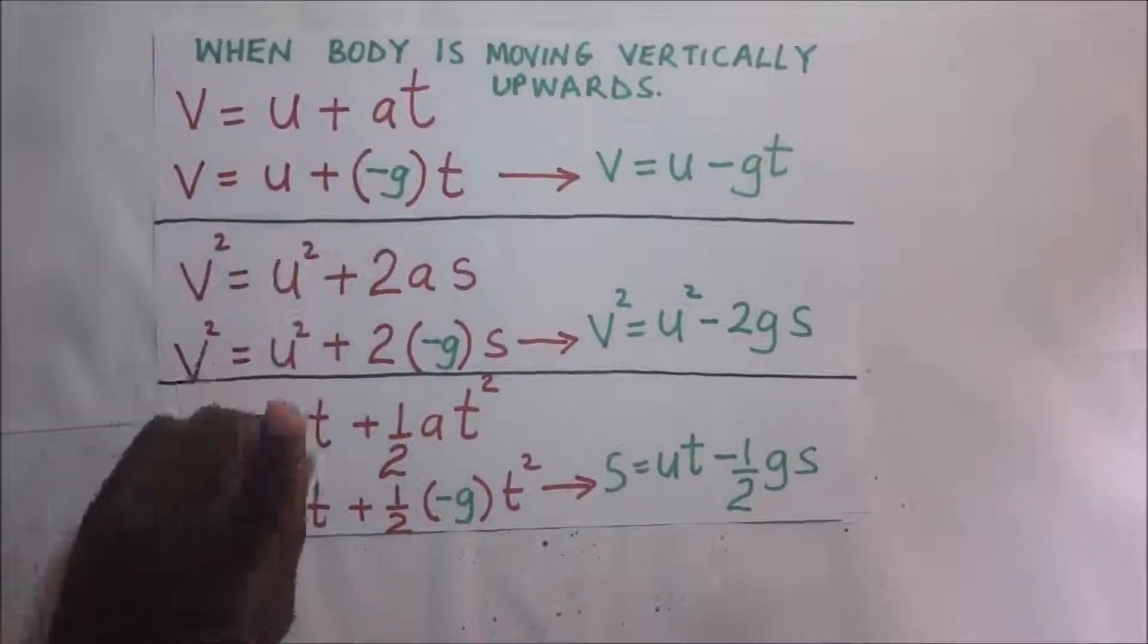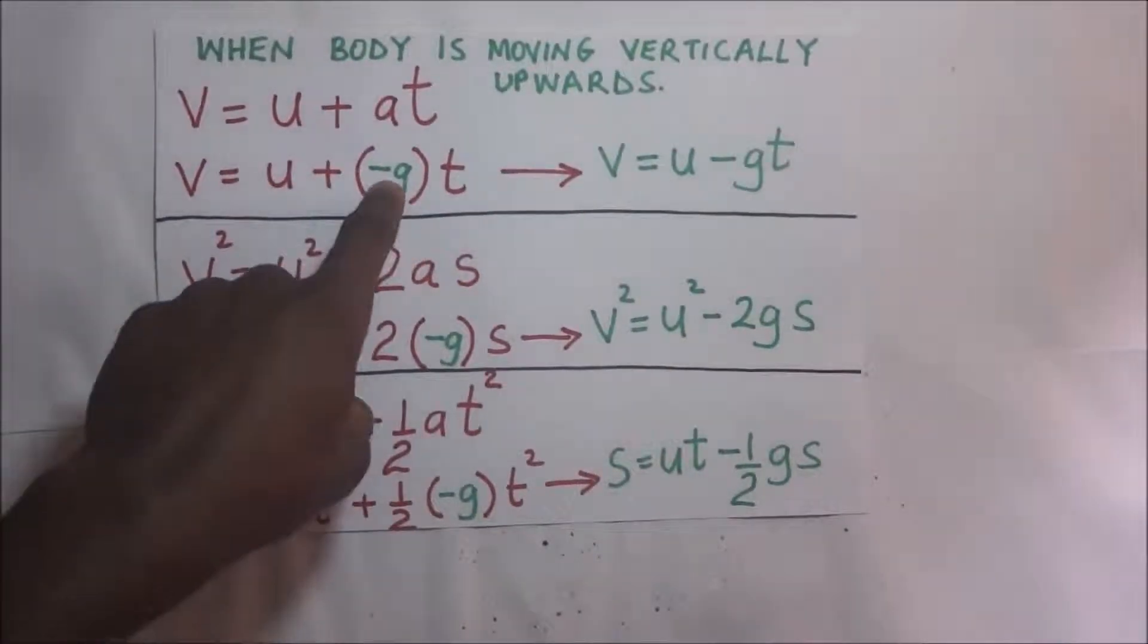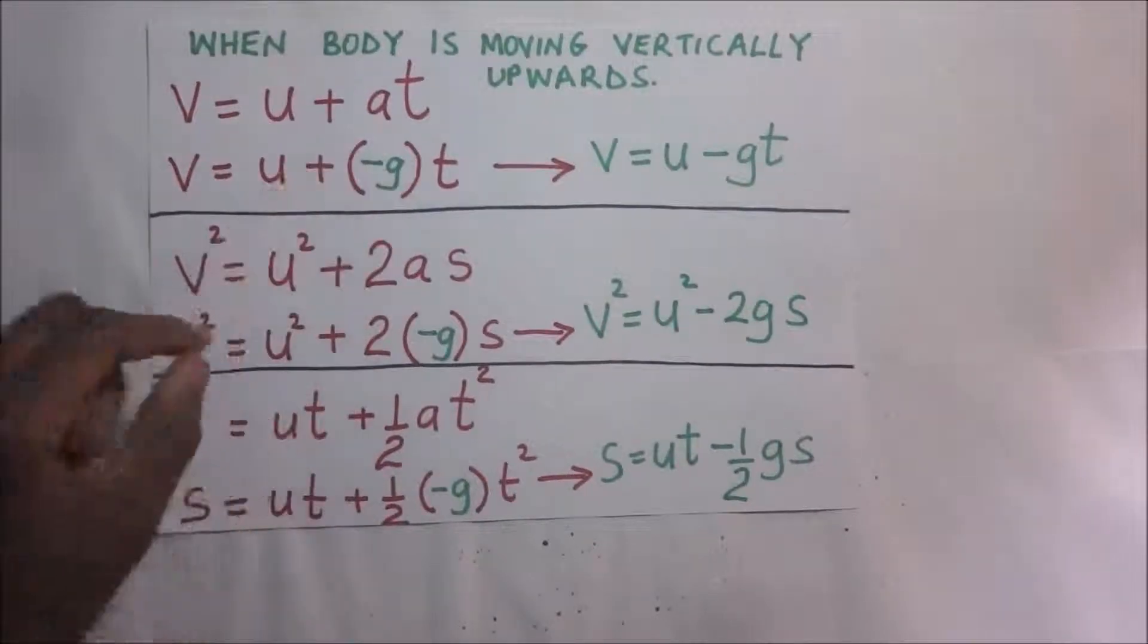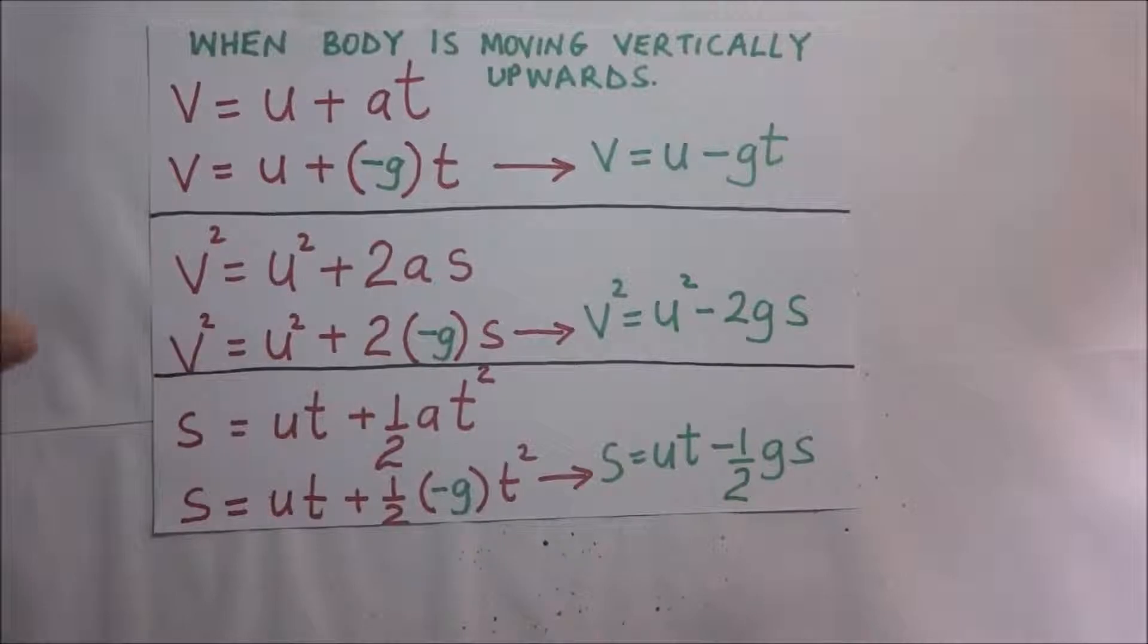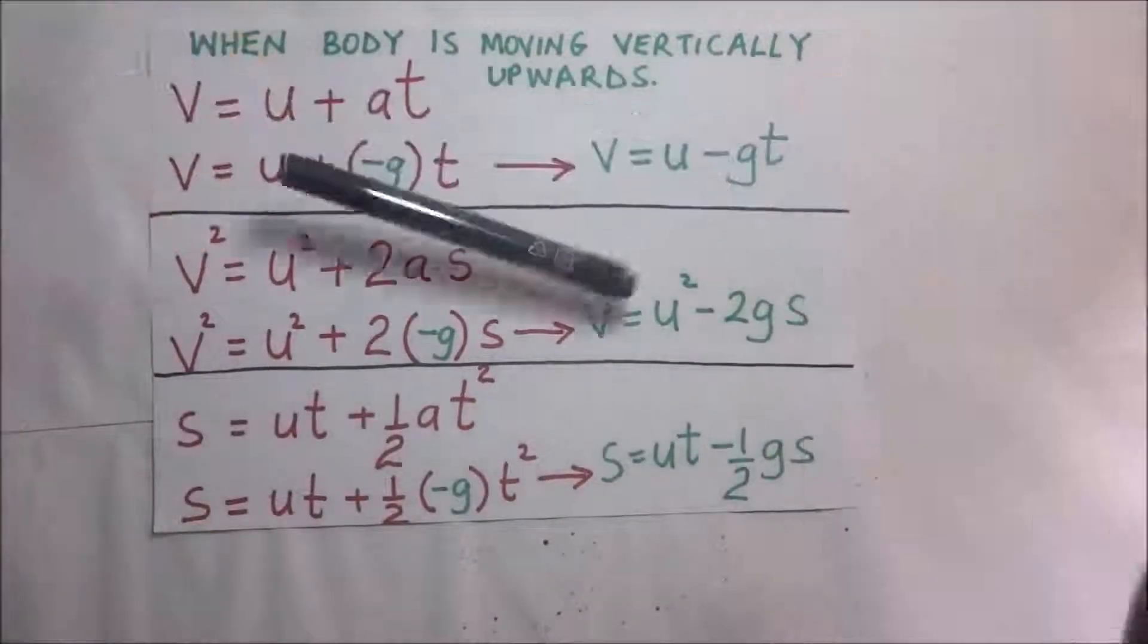Why? Because as you're throwing it upwards it is decelerating, its speed is reducing, its rate of change of velocity is reducing as it's going up. Yet when you throw something, drop it from up, then you drop it down,